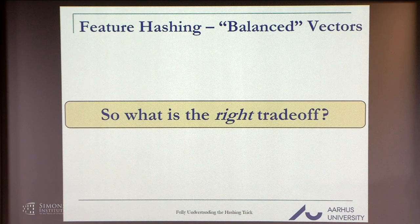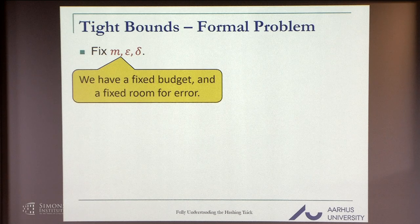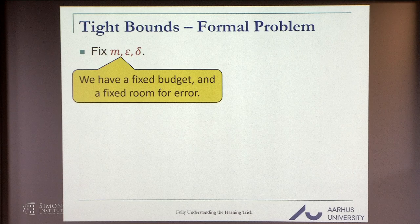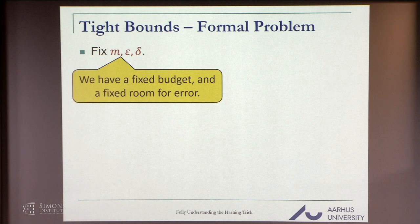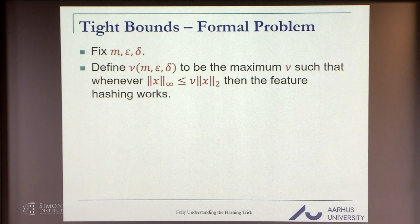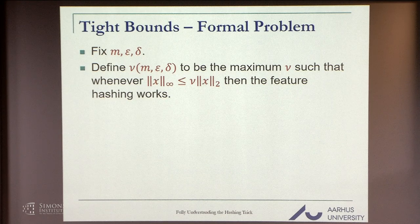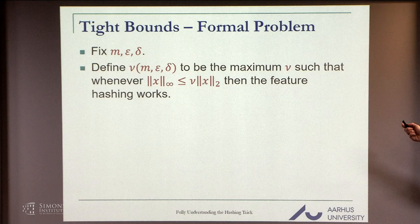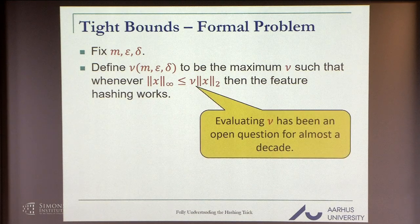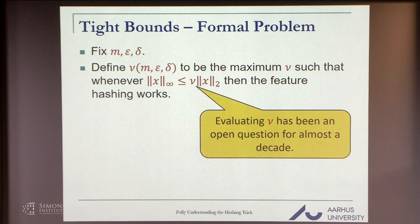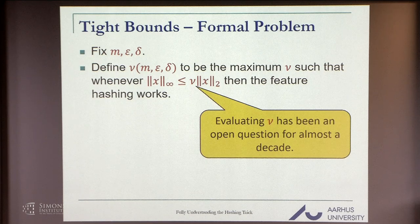So what is the right trade-off here? We fix m, epsilon, and delta, so we have a fixed budget for m and we know exactly how large the error can be and how often we allow ourselves to make errors. We define nu(m, epsilon, delta) to be the maximum nu such that if this quotient is smaller than nu, then feature hashing works.